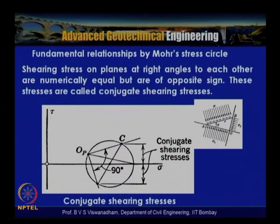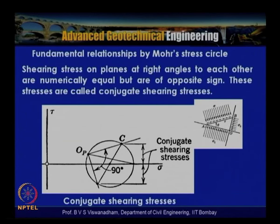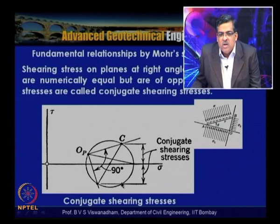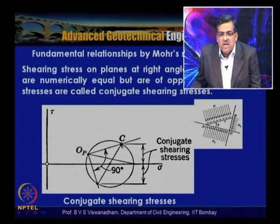Conjugate shearing stresses are shearing stresses on planes at right angles to each other that are numerically equal but opposite in sign. From moment equilibrium of the element, tau zx equals tau xz, or tau xy equals tau yx, or tau yz equals tau zy. On the Mohr circle, conjugate shearing stresses appear as two points symmetrically placed about the sigma axis — equal in magnitude but opposite in sign.